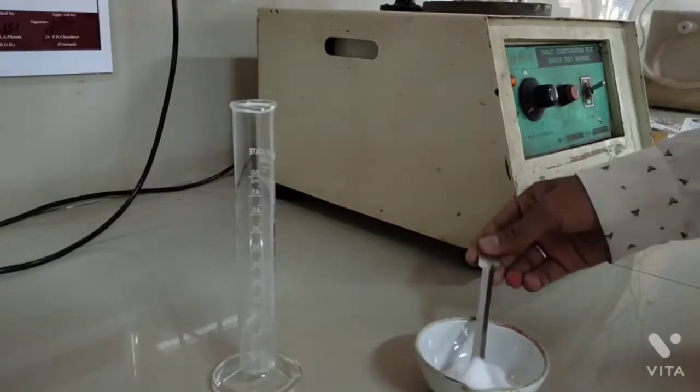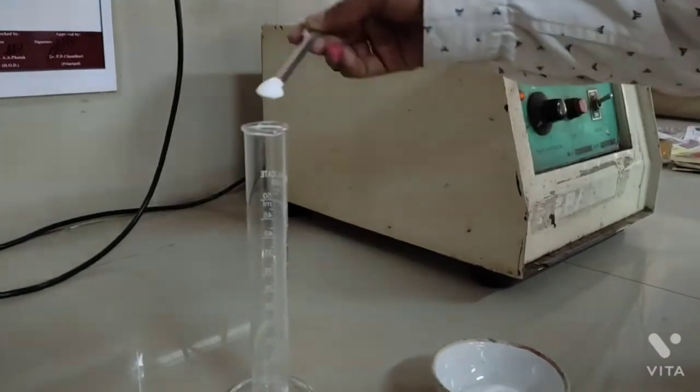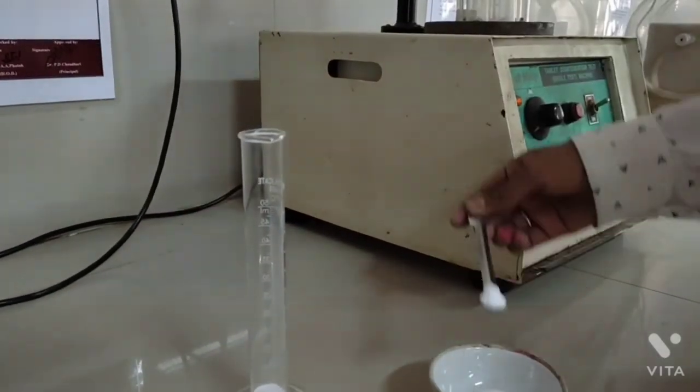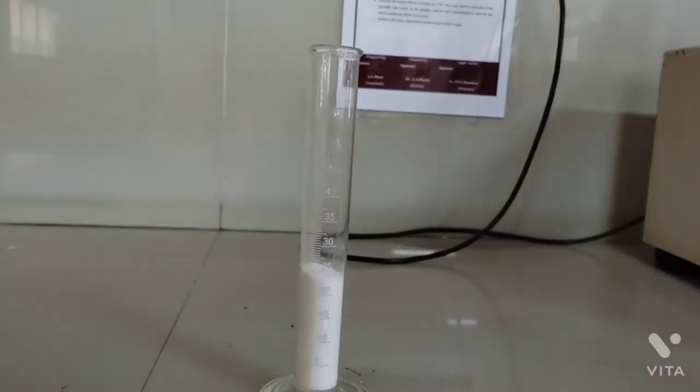Now let's move on to bulk density, tap density and compressibility factor of that powder. Add prepared powder in 50 ml measuring cylinder. Then mark the volume of powder.